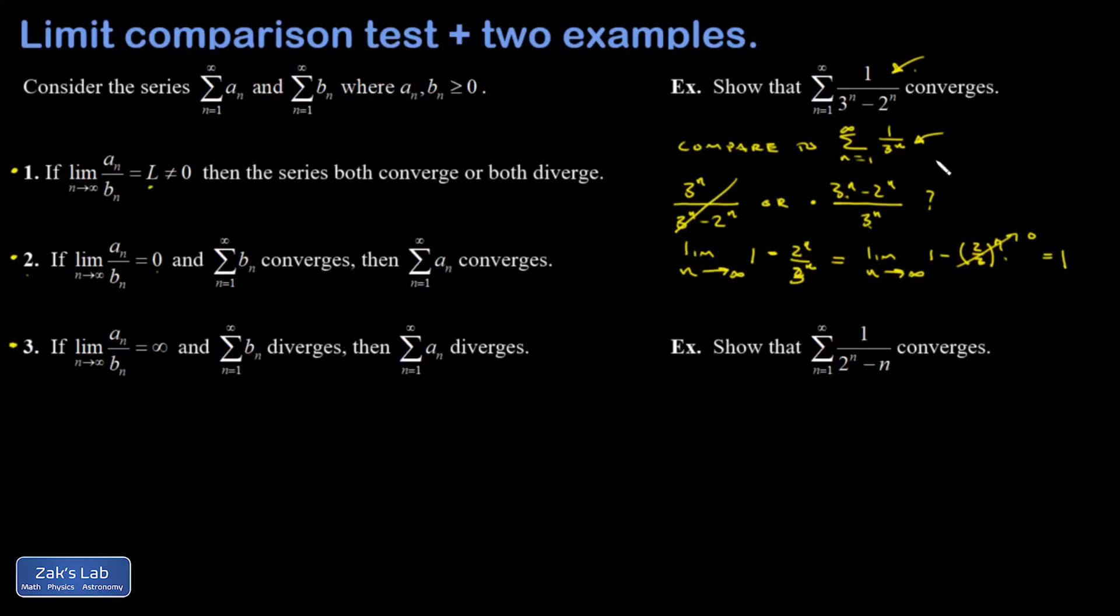So now given that one over three to the N is a convergent geometric series, we conclude that our original series converges as well.